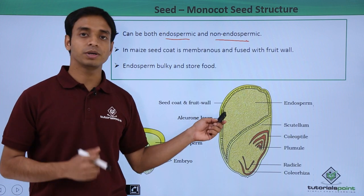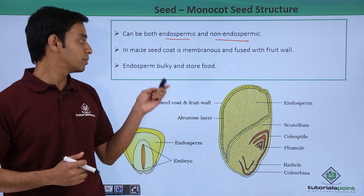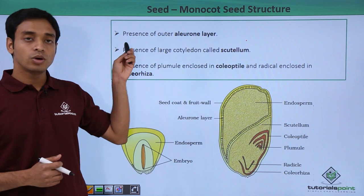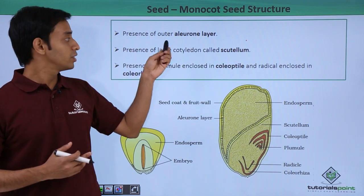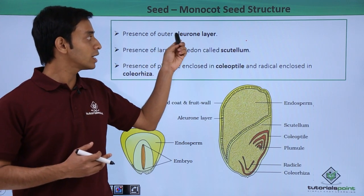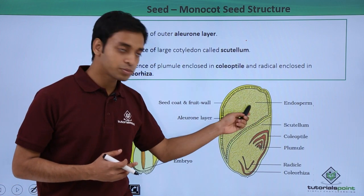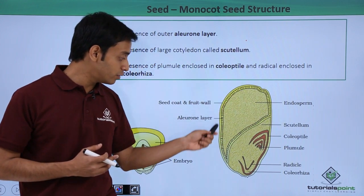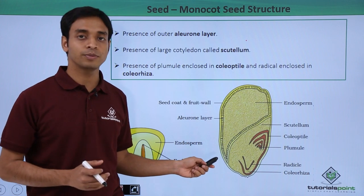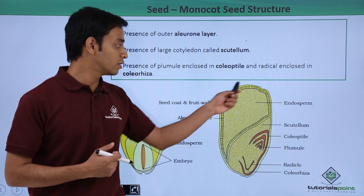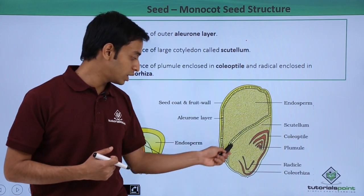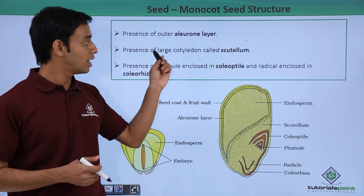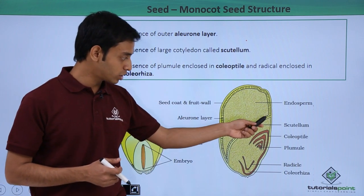The endosperm has reserved food material for the baby plant. The endosperm is covered by an outer layer which is mostly proteinaceous in nature — made up of proteins. This layer is known as the aleurone layer.